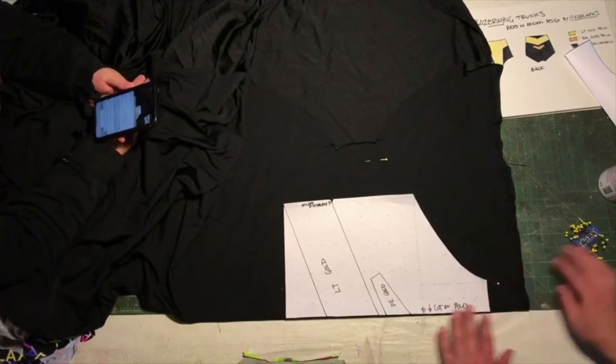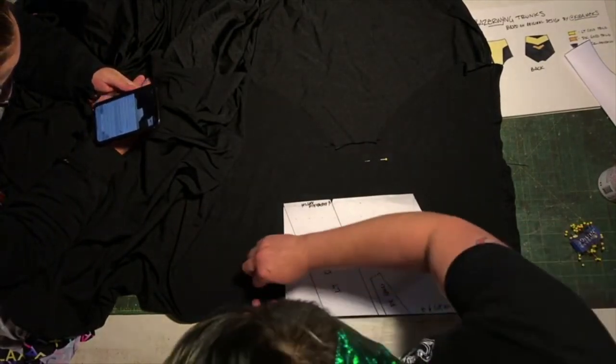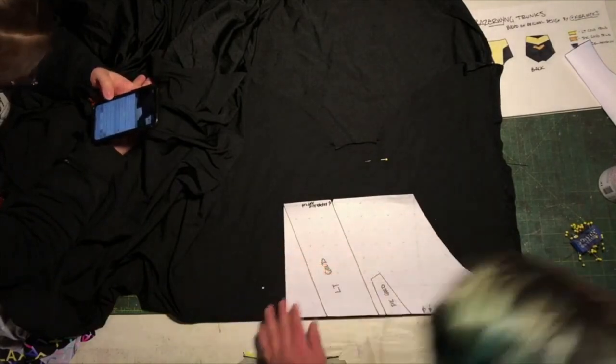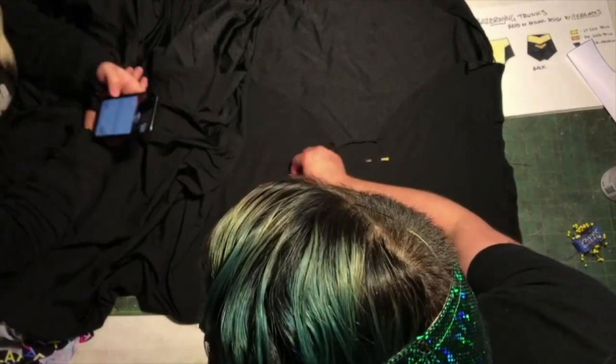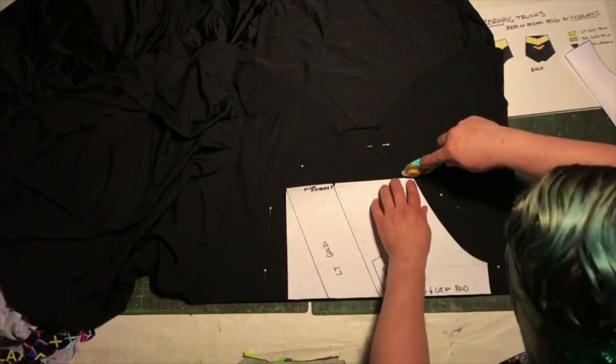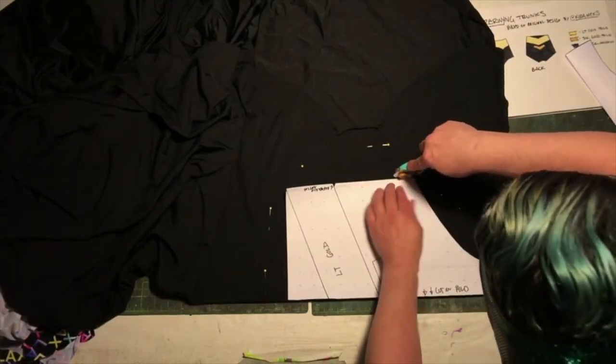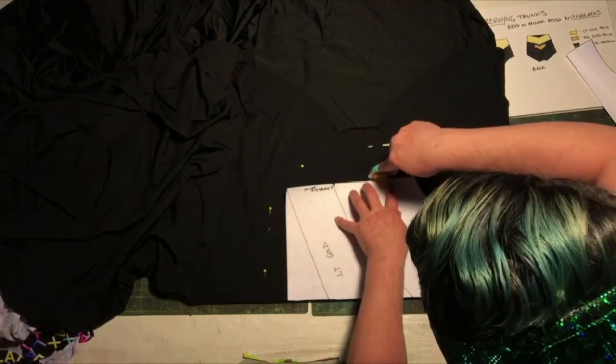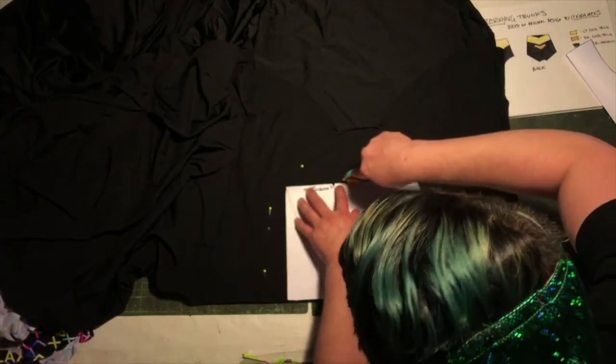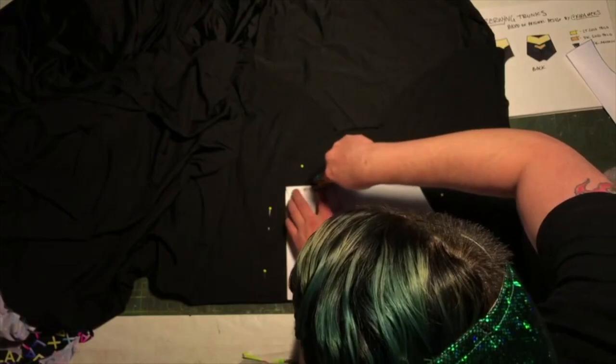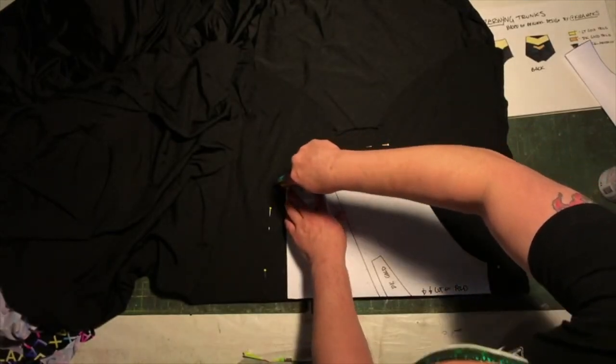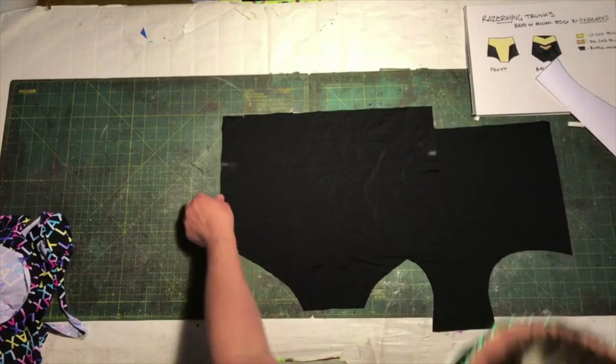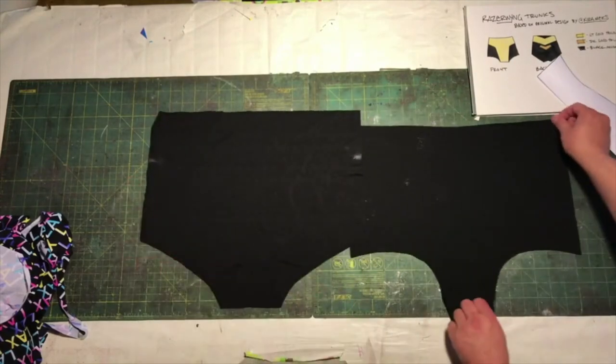We begin by cutting out the base to our trunks. These patterns were intended to be lined up on the fold. So I'm making sure to line the edge of the pattern as close to the edge as possible, before tracing and cutting out pieces for the front and back. Kate made some markings here to help line up the applique later, so I'm marking them with chalk as I go.